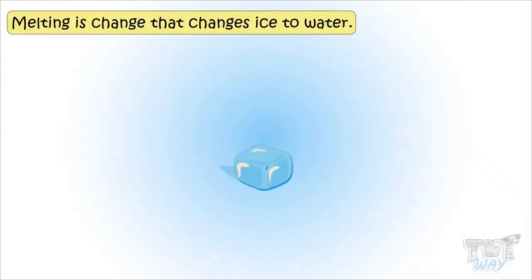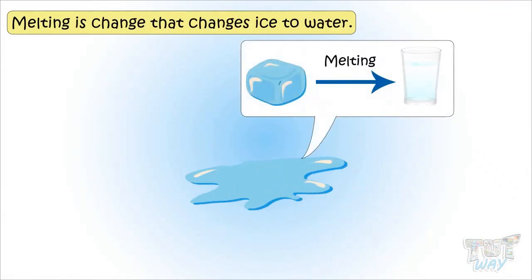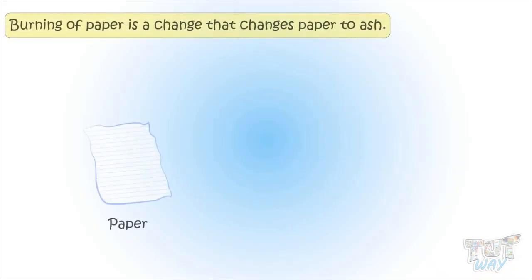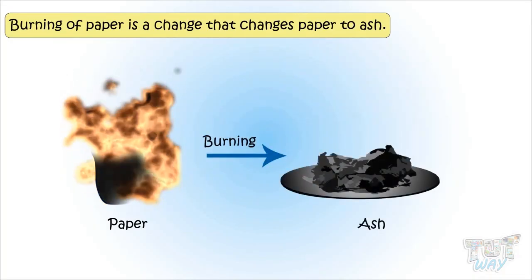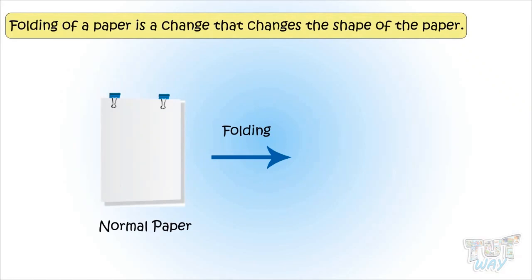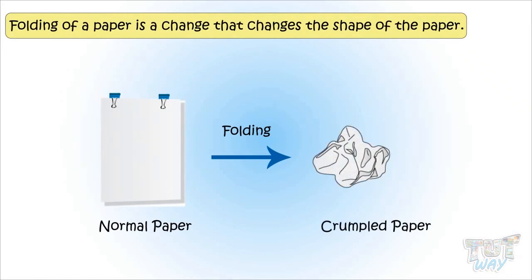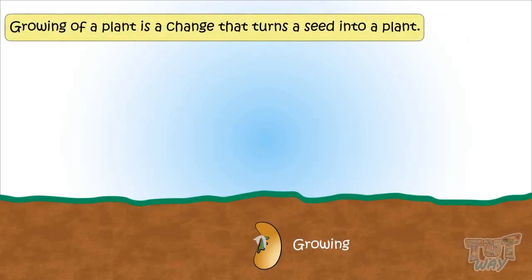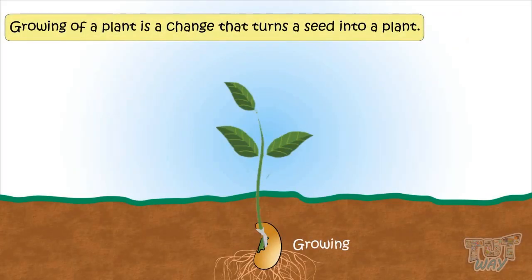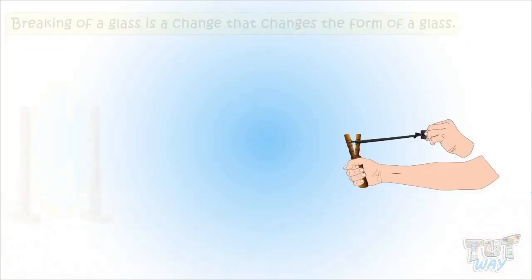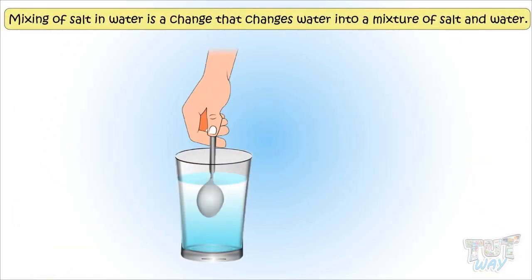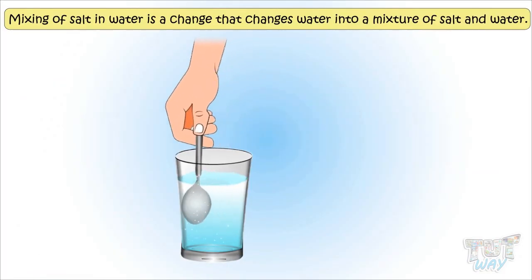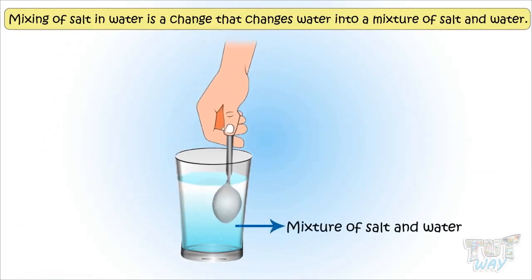Melting of ice is a change that turned ice into water. Burning of paper is a change that turned paper into ash. Folding of paper is a change that changed the shape of a paper. Growing a plant from a seed is a change that turned seed into a plant. Breaking of glass is a change that changed the form of a glass. Mixing of salt and water is a change that changed water into a mixture of salt and water.